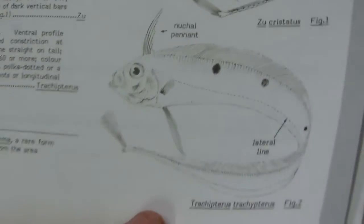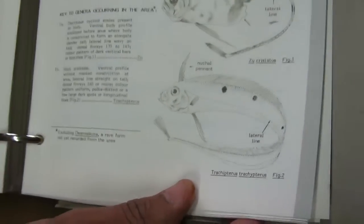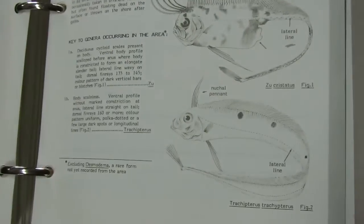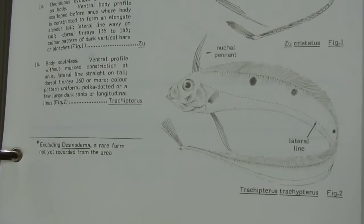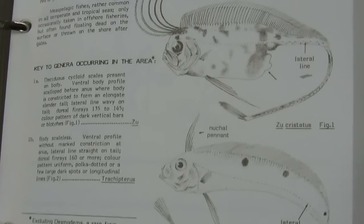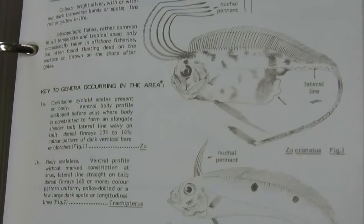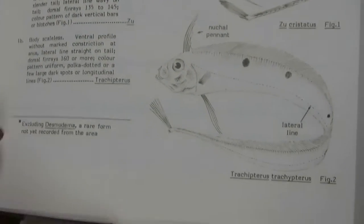Earlier a mistake was made and needs correction. In the case of Balistidae, Diodontidae, Ostraciidae, and Triacanthidae, the lateral line is inconspicuous — meaning not noticeable, rather than completely absent.